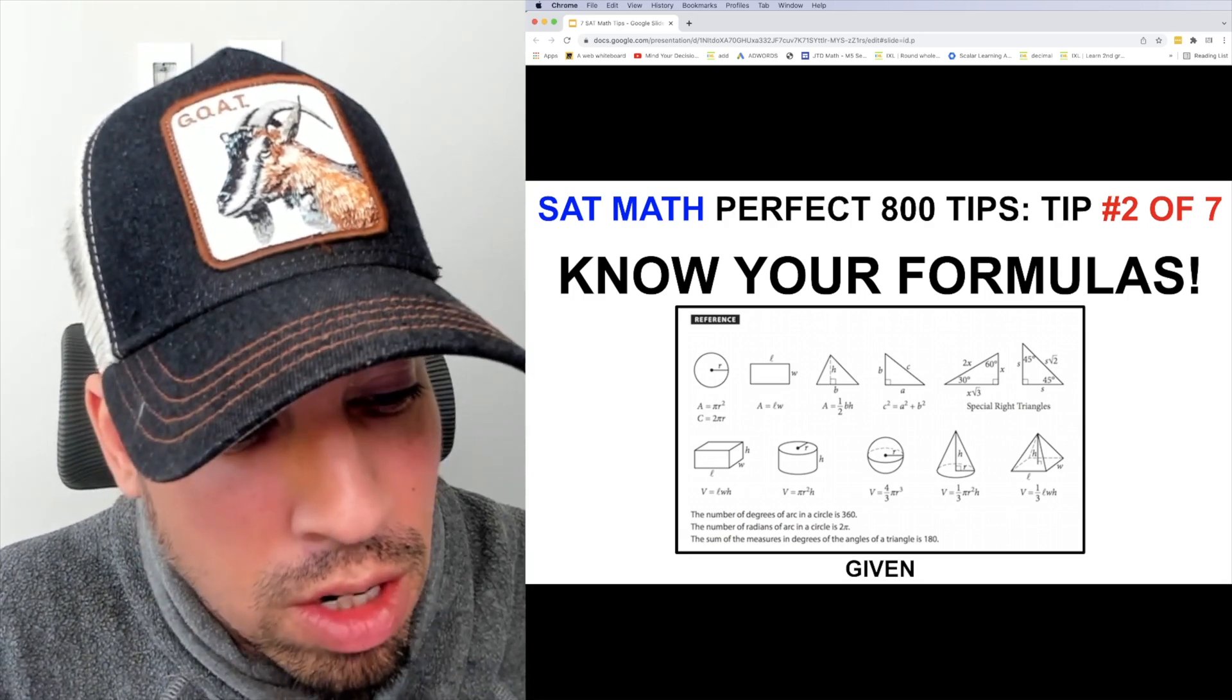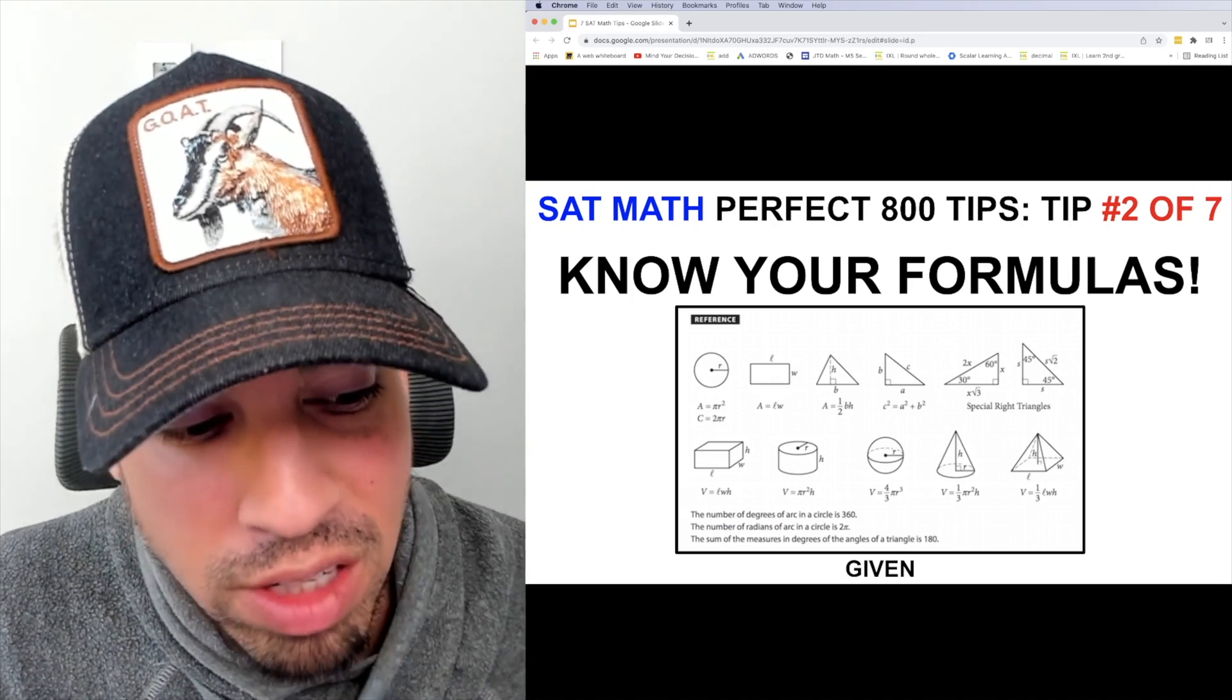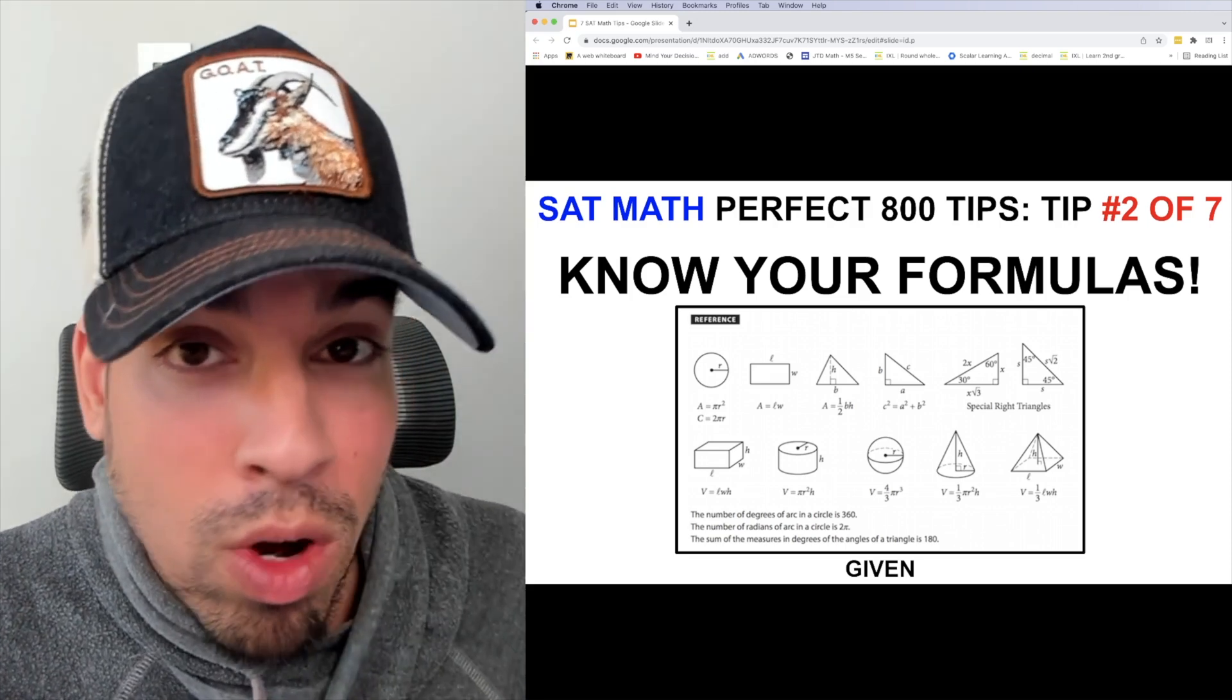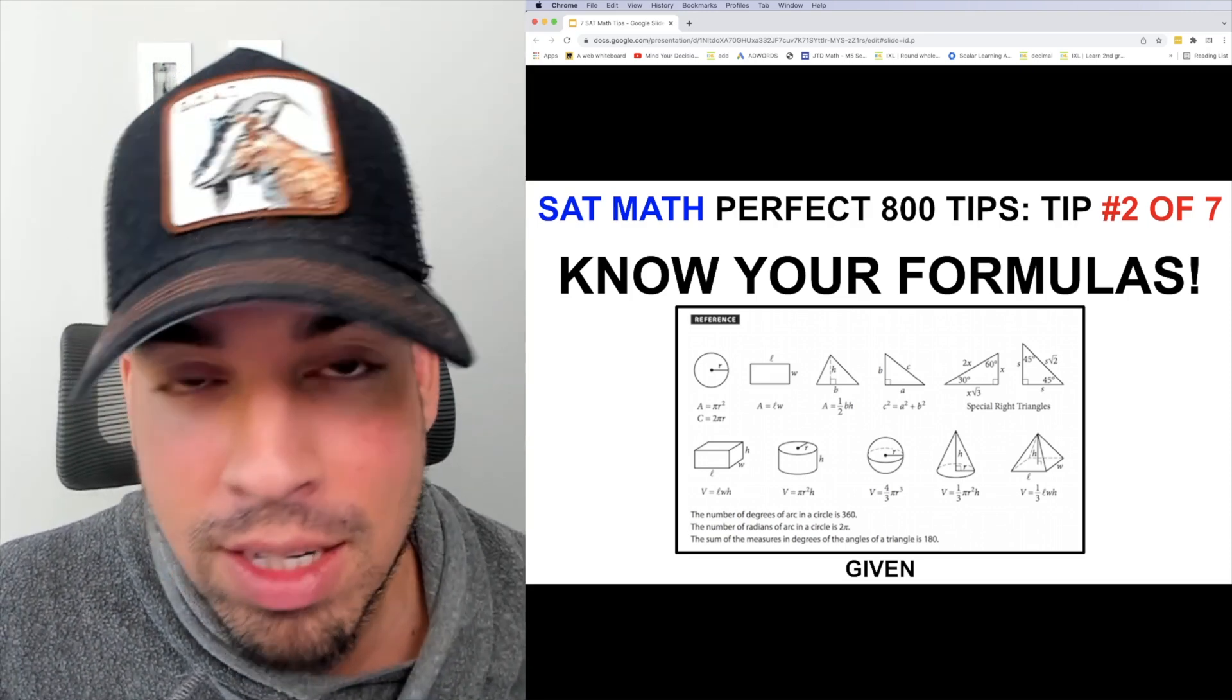Pyramids, cylinders, cones, and when you look at this it also gives you the equivalency of radians to degrees. It's important to know what's on here so you can go back and check on it. You don't have to commit these to memory, so save that space for other things.